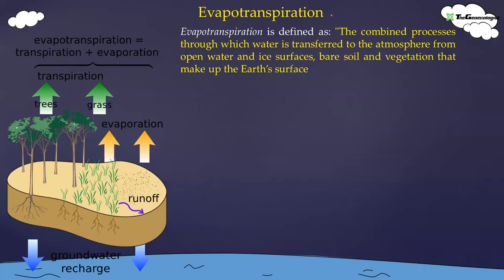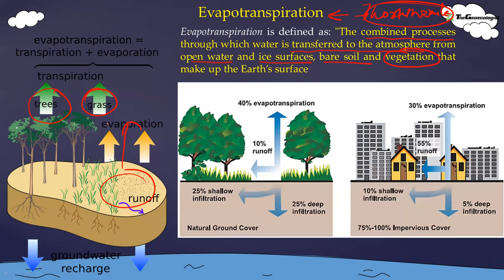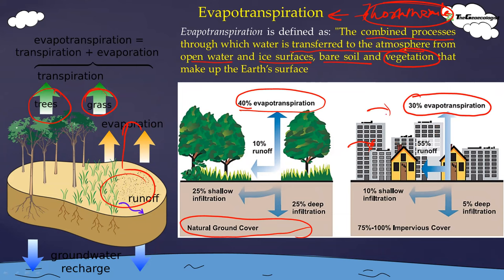Evapotranspiration is the combined process where water is transferred to the atmosphere from open water sources, ice surfaces, bare soil, and vegetation pores — evaporation and transpiration together. This was the basis for Thornthwaite's climatic classification. Notably, rural areas have more evapotranspiration, while urban built-up areas have less, which contributes to urban heat islands — heat is trapped, less evapotranspiration means less cloud formation and less precipitation.